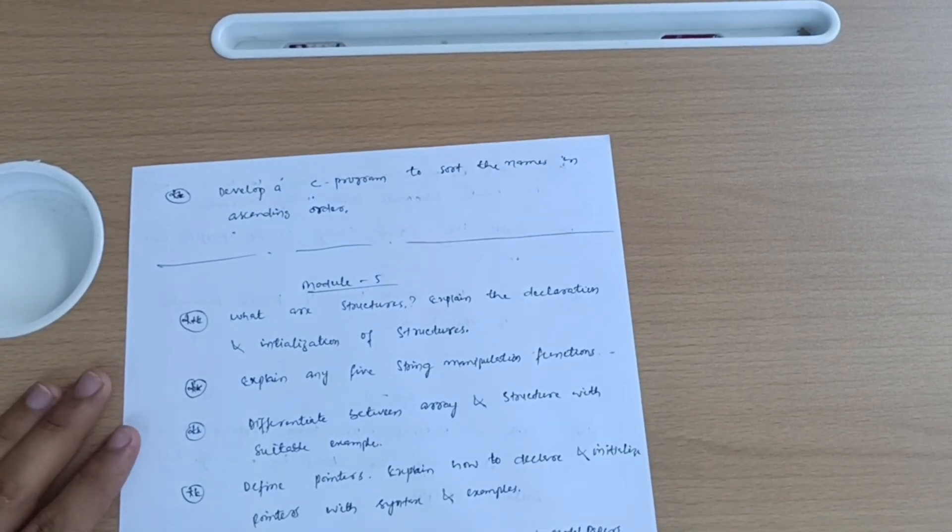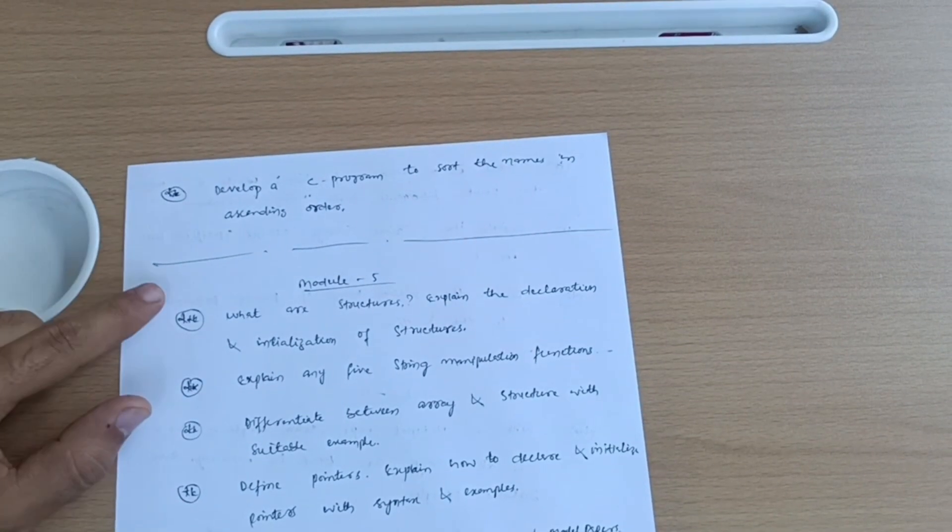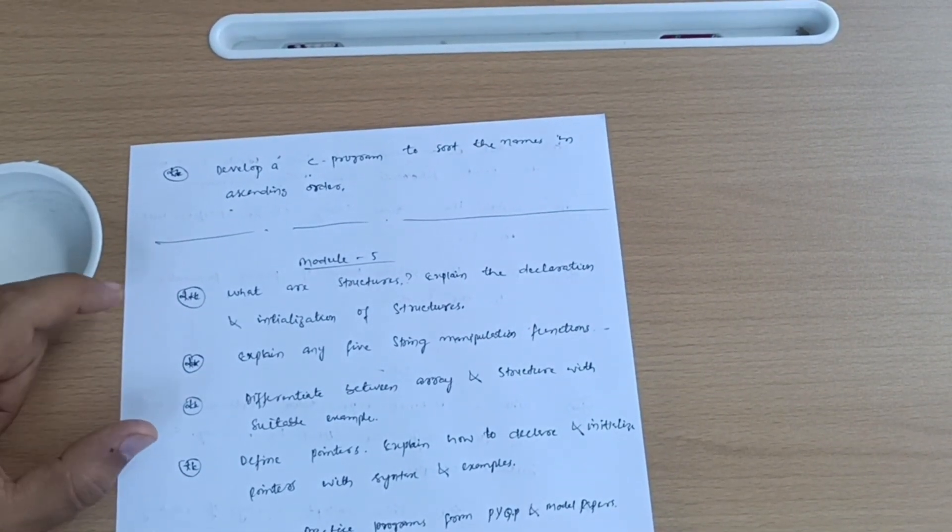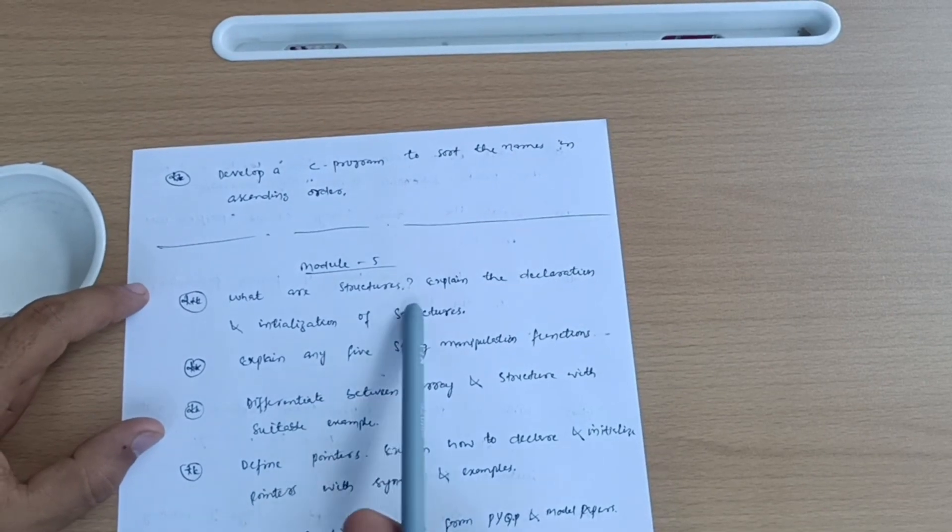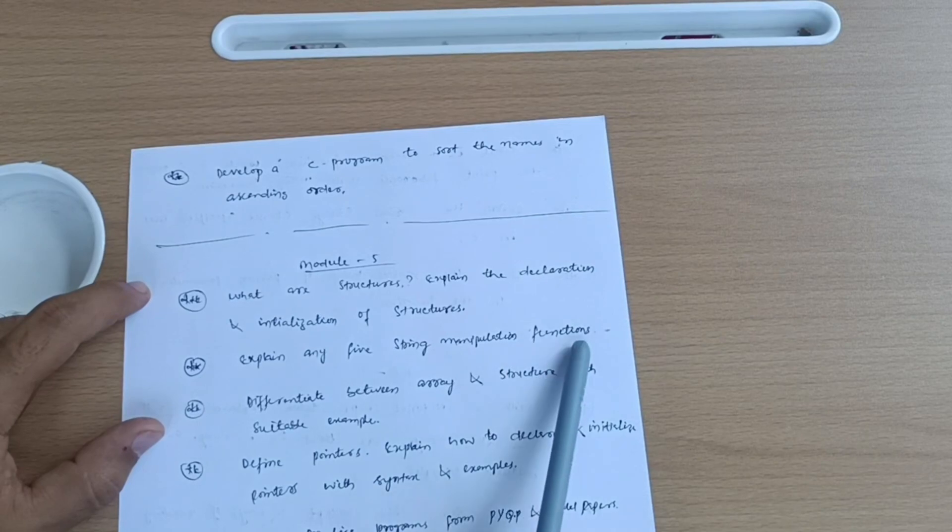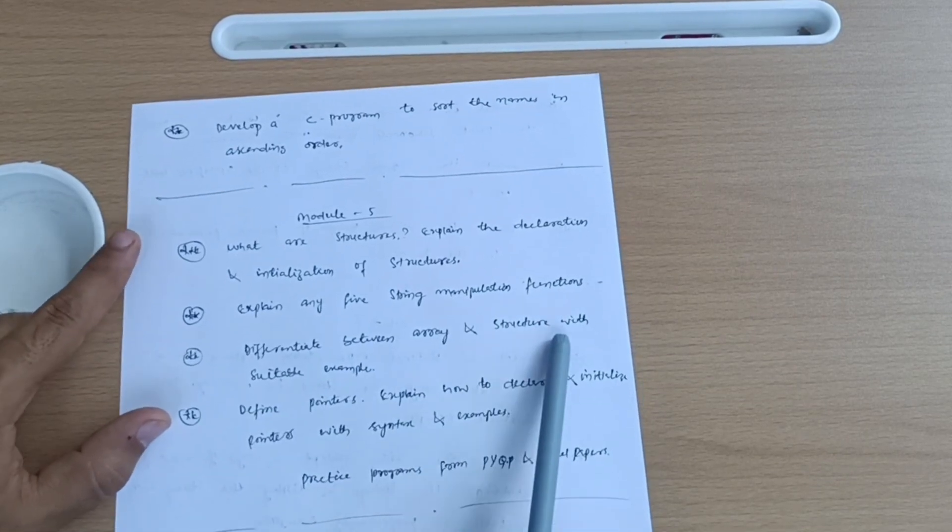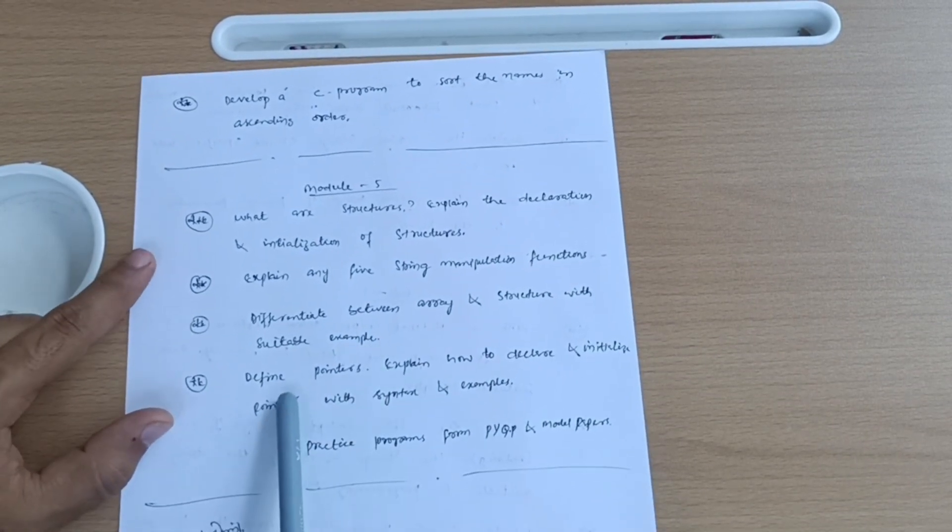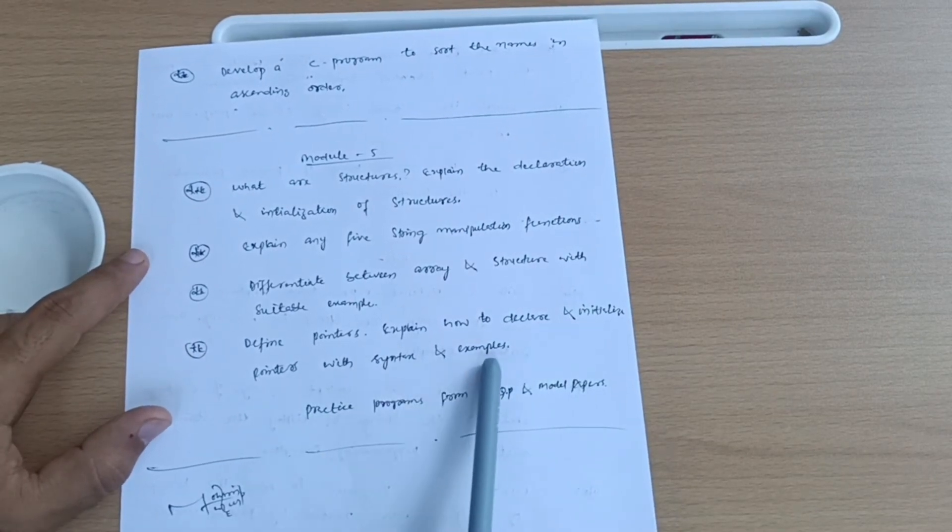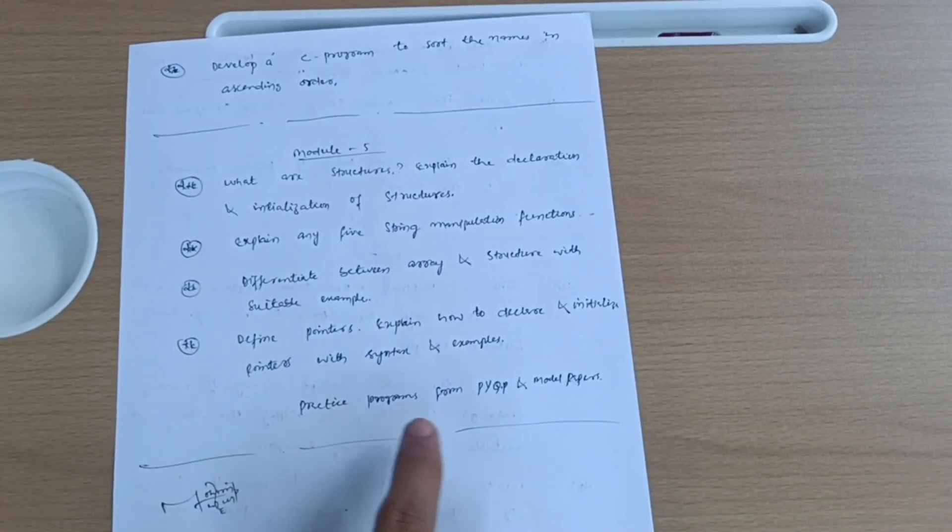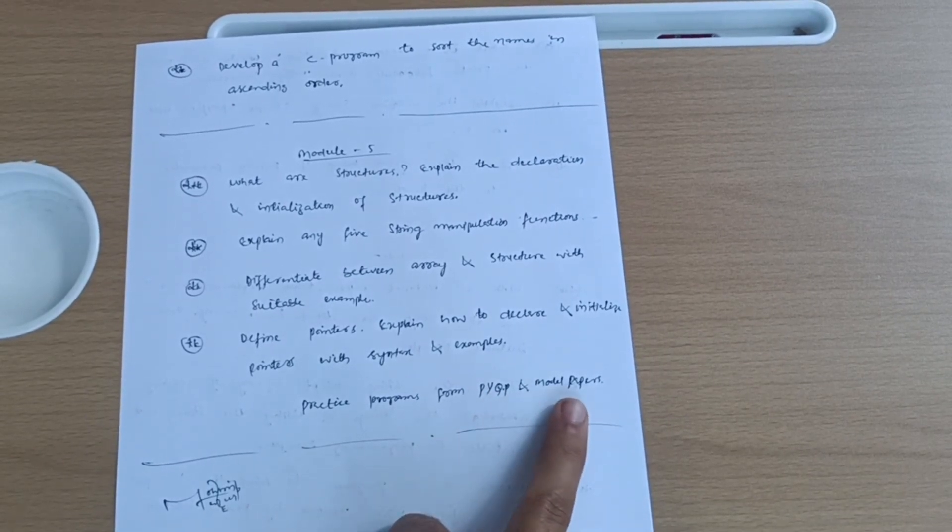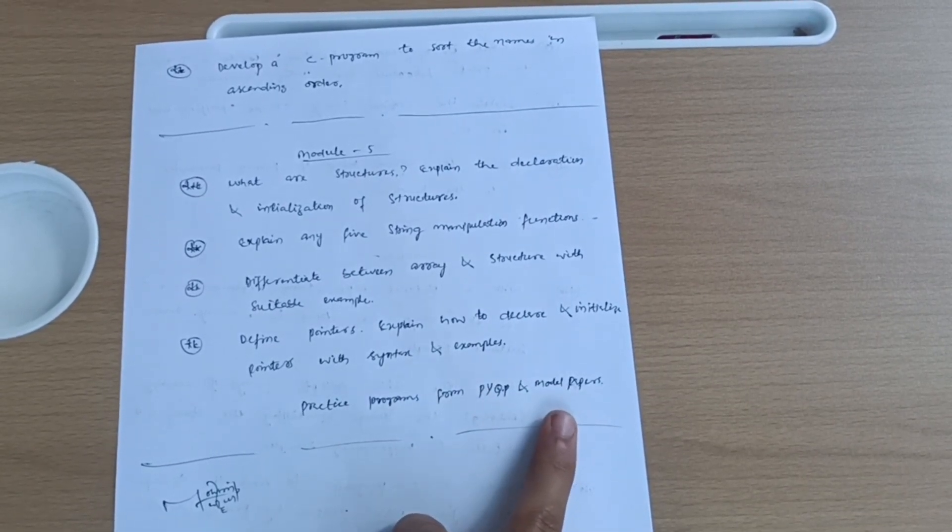Next is the module fifth, in which some theoretical concepts are there. Likewise in module four, a lot of programs are also in module fifth. But some theoretical questions are here which I have taken: what are structures? Explain the declaration and initialization of structures. Explain any five string manipulation functions. Differentiate between array and structure with suitable example. Define pointers. Explain how to declare and initialize pointers with syntax and examples. For programs you should go through the previous question papers which I have uploaded on my Instagram account and model question papers so that you will be on the safer side.